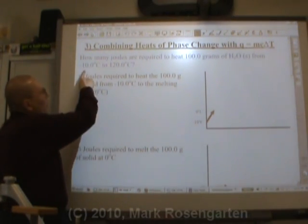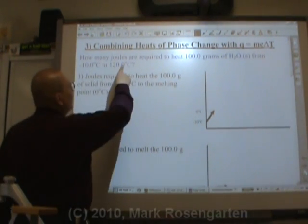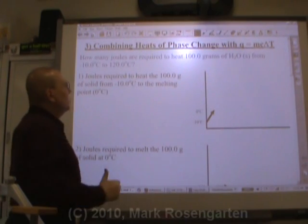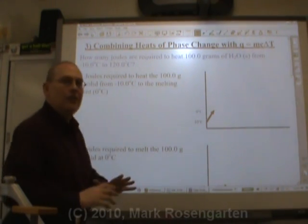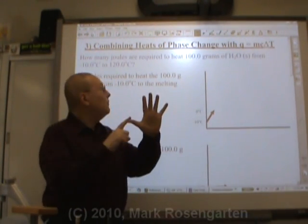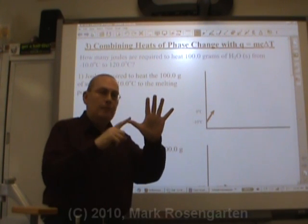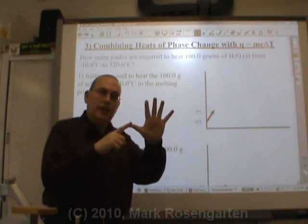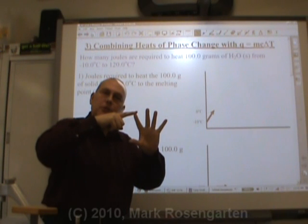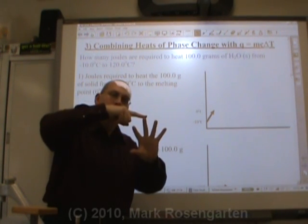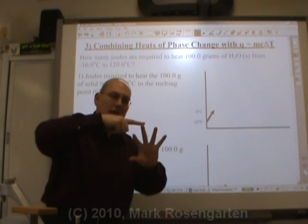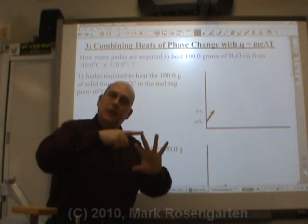We're below the freezing point to above the boiling point, so we're going to carry this out in five steps. Step one, heat it from minus 10 up to zero. That uses MC delta T. Two, melt it. That uses heat of fusion.